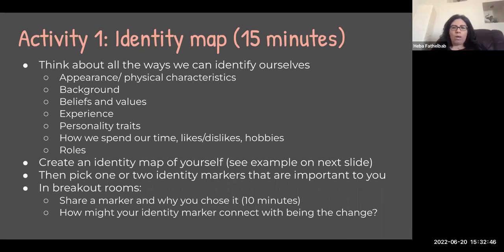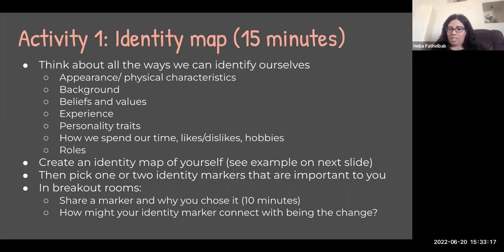So once we have that done — everyone has now created their identity maps. We're choosing one or two of the identity markers that we've used in our maps that we feel are most important to us and that really identify who we are. Everyone in the breakout rooms is doing that now. We have our lovely volunteer, Virginia, who is going to start with one of her markers and why she's chosen it.